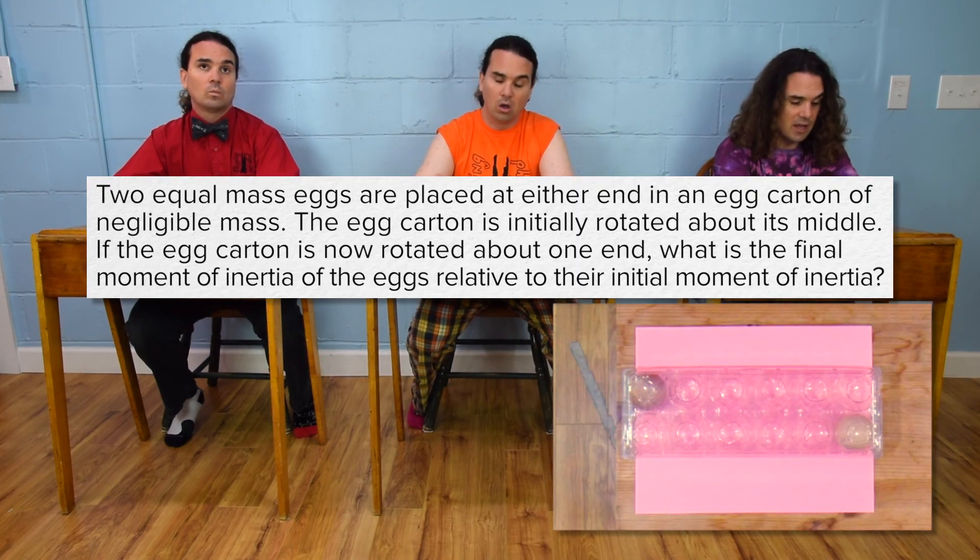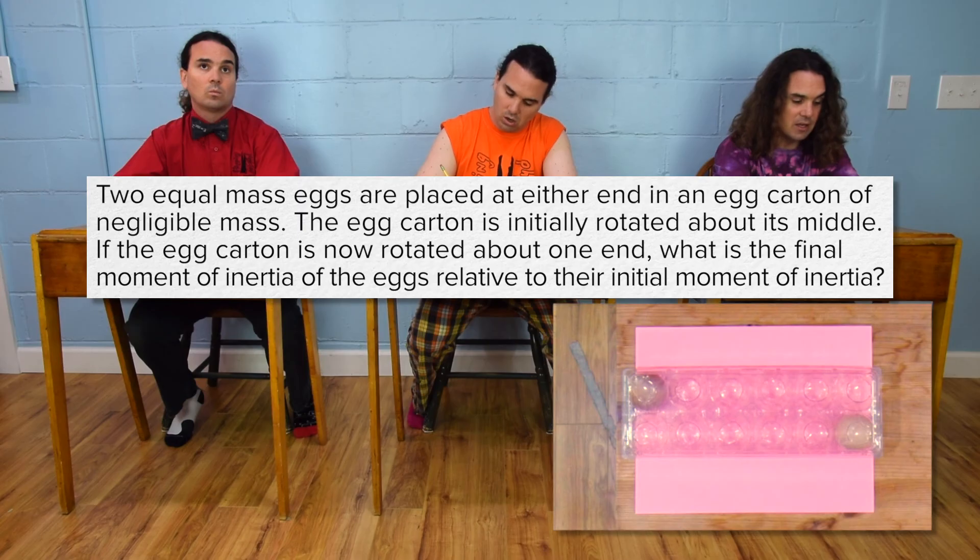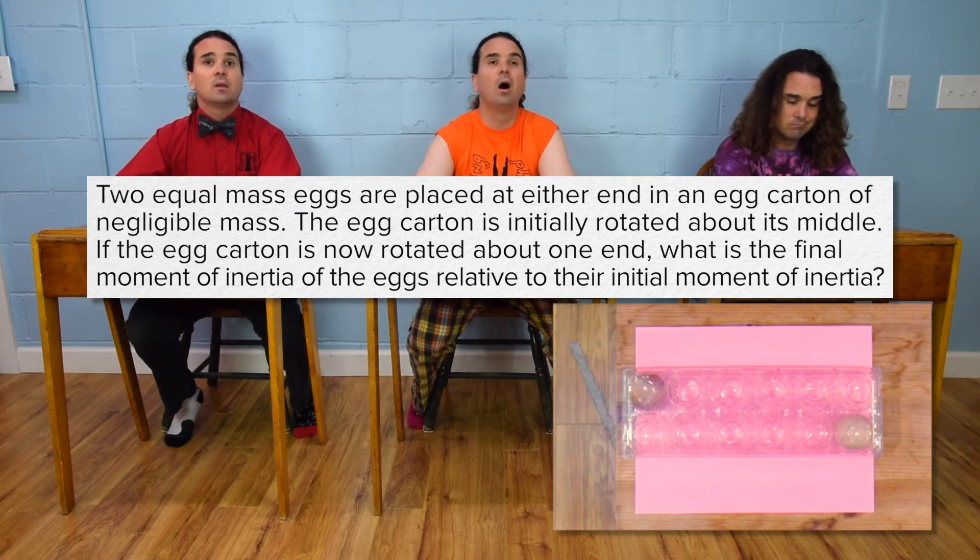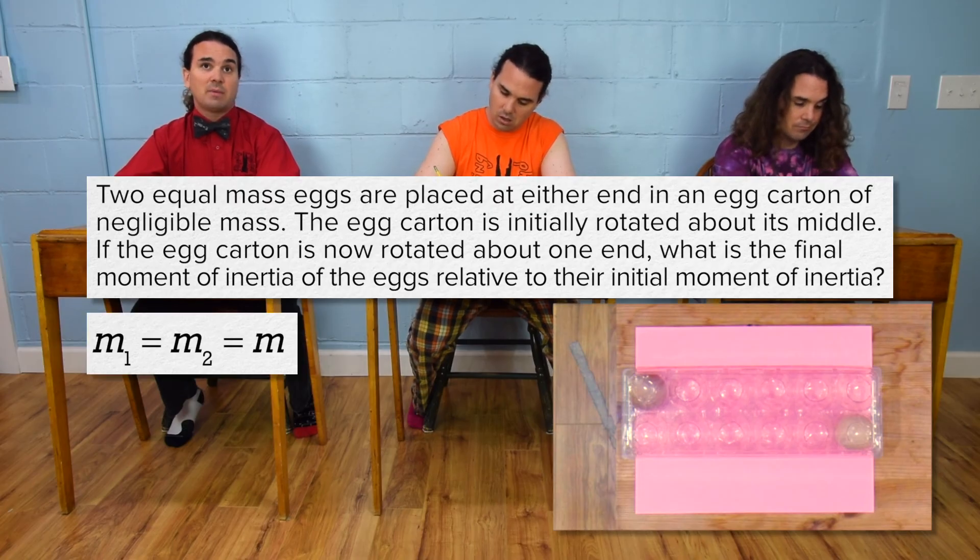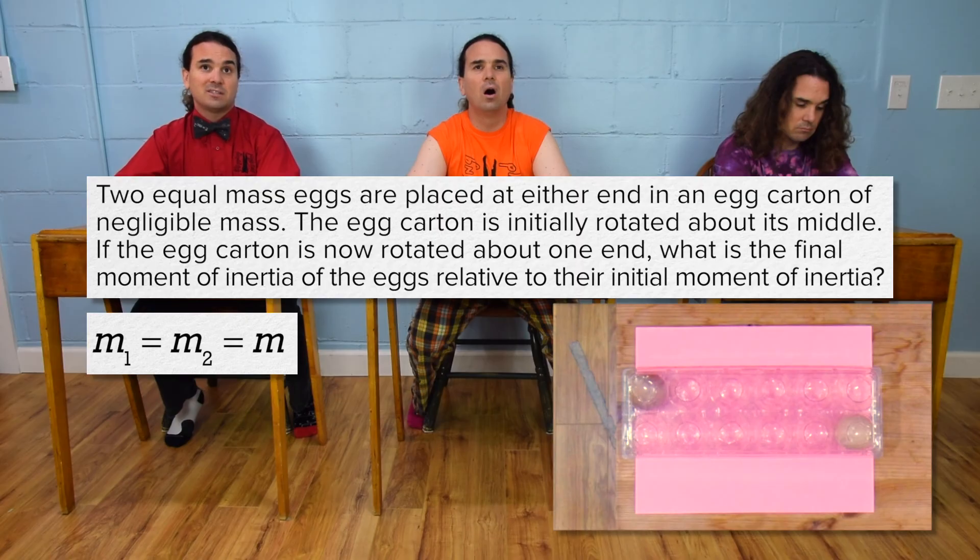Two equal-mass eggs are placed at either end in an egg carton of negligible mass. Both eggs have the same mass, so m₁ = m₂ = m. The mass of the egg carton is so small it is negligible, so we do not need to do anything with that.